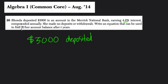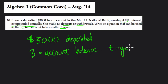We earn 4.2% interest compounded annually. So if she made no deposits or withdrawals, write an equation that can be used to find B. So B is going to equal her account balance after T years. B is the account balance. And T is what we're going to use for the years that have passed by. So let's make sense of this problem and write the equation.